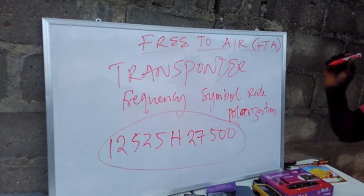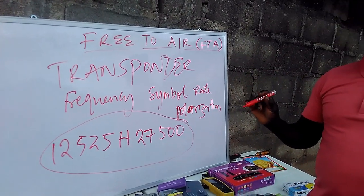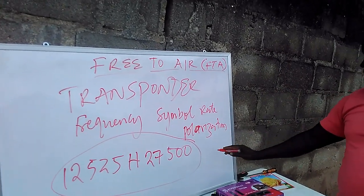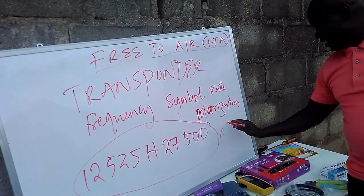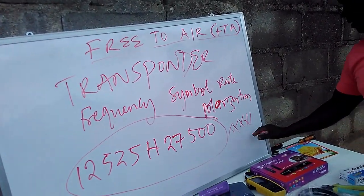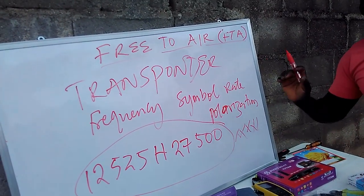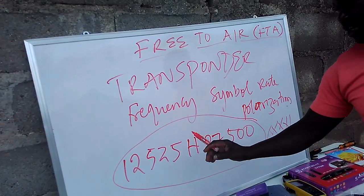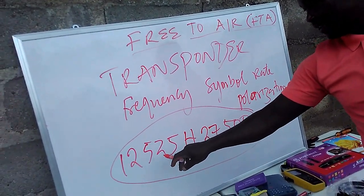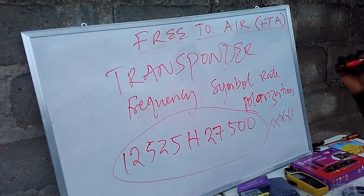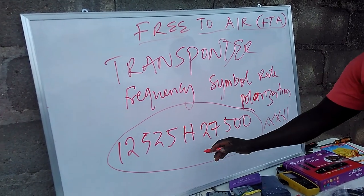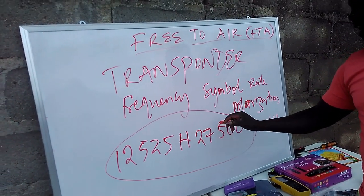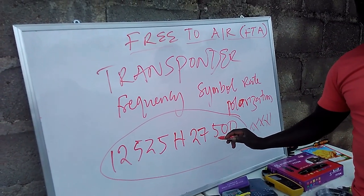The satellite itself is also important — even more important. Because each of the channels, for you to track them, you must have this information. Each channel has its own frequency, its own polarization, and its own symbol rate.